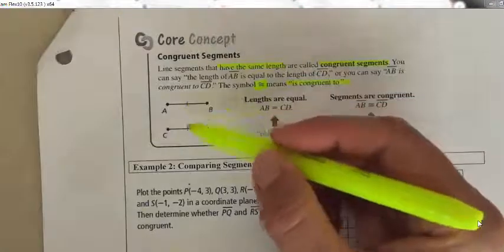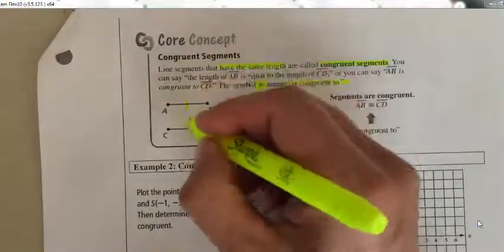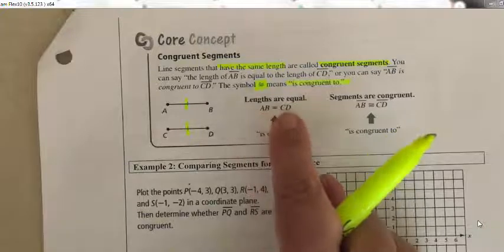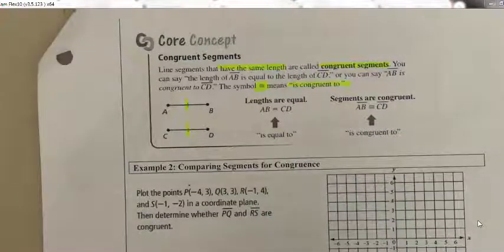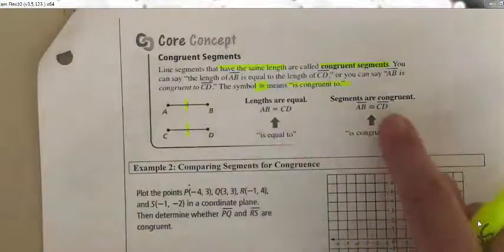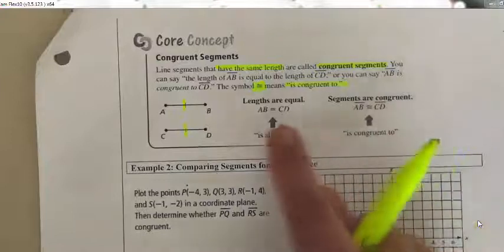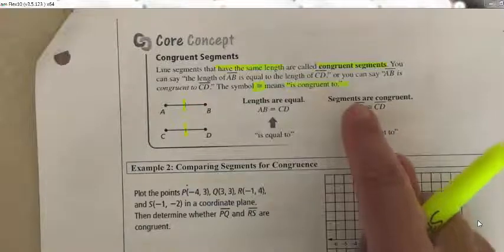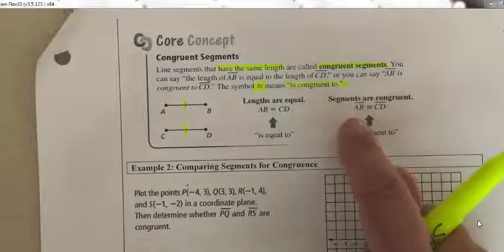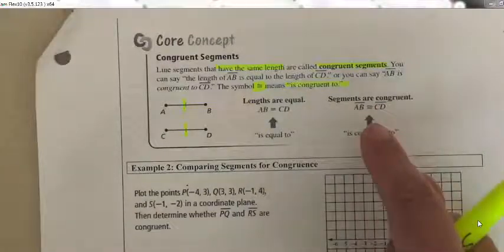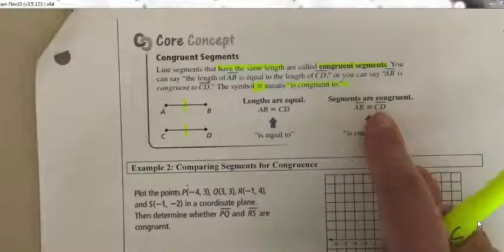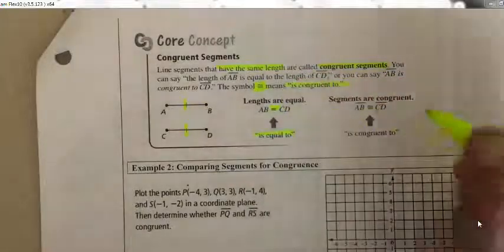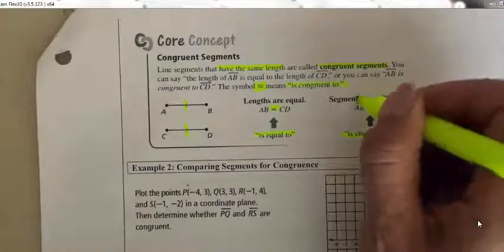To show that segments are congruent we can use little tick marks on the diagram. When we say lengths are equal we use an equal sign without the line segments on top. When we say segments are congruent, we put the little line segments on top of the letters and use the congruent symbol — the equal sign with a tilde on top — between them.